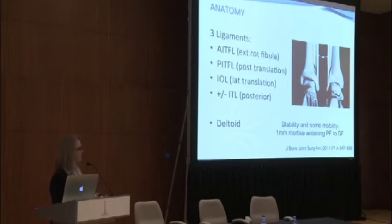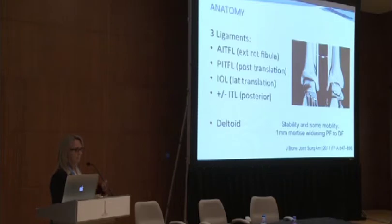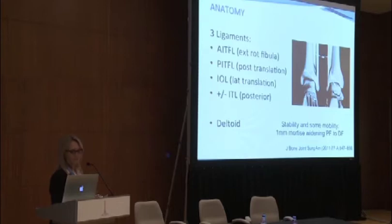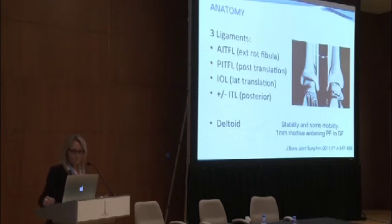In order to make an accurate diagnosis of syndesmosis injury, you really need to know the anatomy. The syndesmosis consists of three main ligaments: the anterior inferior tibiofibular ligament in the front, the posterior inferior tibiofibular ligament in the back, and the interosseous ligament. There's also the inferior transverse ligament, which is really an extension of the posterior one. The anterior ligament prevents external rotation of the fibula, the posterior ligament prevents posterior translation of the fibula, and the interosseous ligament prevents lateral translation. The deltoid is also a really important ligament, as it maintains stability between the tibia and fibula.